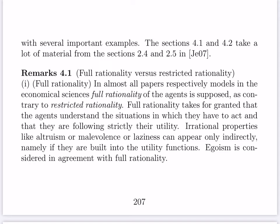Emotions are not allowed. Irrational properties like altruism, malevolence, or just laziness are not allowed to appear directly — they can appear only indirectly if they are built into the model by the shape of the utility functions. Egoism, on the other hand, is not considered an emotion here; it is in agreement with full rationality.